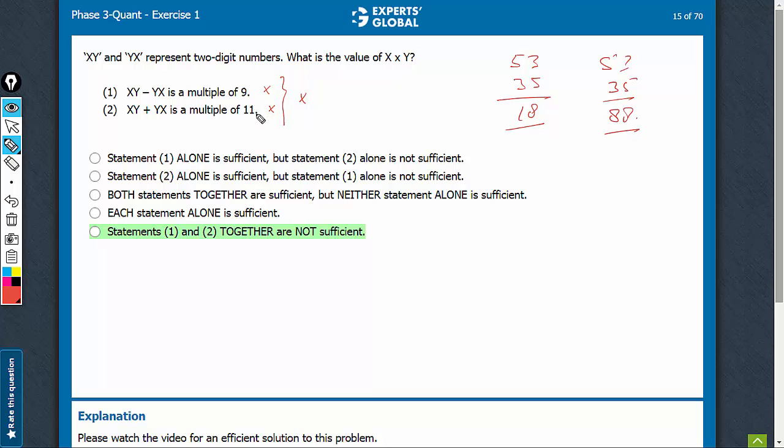So, these statements are always true. The reason being, xy means 10x plus y. See, 42, for example, means 4 into 10 plus 2. So, xy means 10x plus y, yx means 10y plus x.